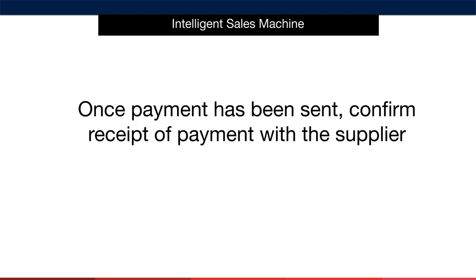Once payment has been sent, confirm receipt with the supplier by emailing and asking whether they've received the funds. This is essentially everything you need to know about making payments. The actual interface you'll use depends on the third-party provider or bank you're using. The process is pretty simple and straightforward, and if you have any issues using either the bank or World First system, simply reach out to them and ask for help.